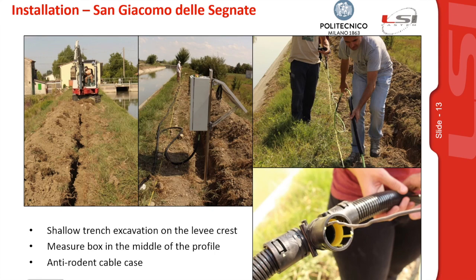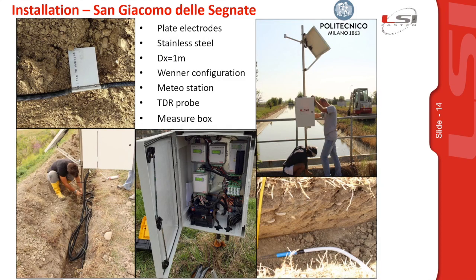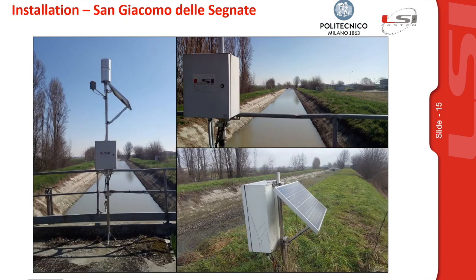Here are some pictures of the first installation in San Giacomo delle Segnate. A shallow trench was excavated on the levee crest, the measuring box was placed in the middle of the profile, and the cables were protected with an anti-rodent plastic case. One of the plate electrodes is shown — its wide surface guarantees lower contact resistance compared to road electrodes. A meteorological station was also installed to monitor external variables such as rainfall, temperature, and water level in the canal. A TDR probe was installed as a punctual reference for soil saturation. After the trench is closed, the system has minimal visual impact, with only the box and solar panel visible.